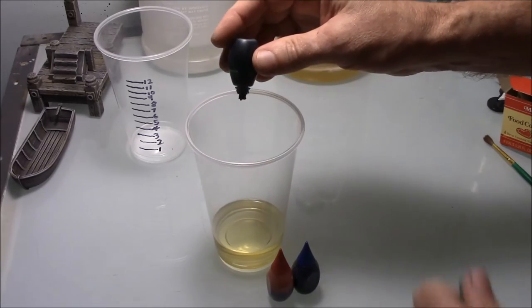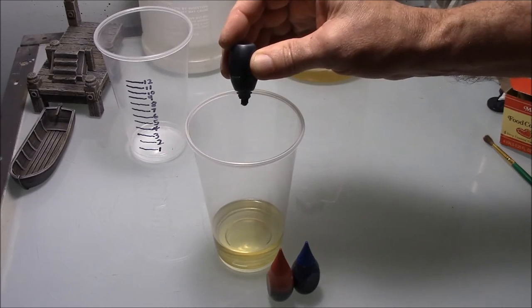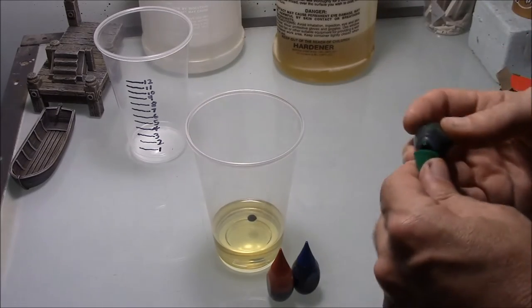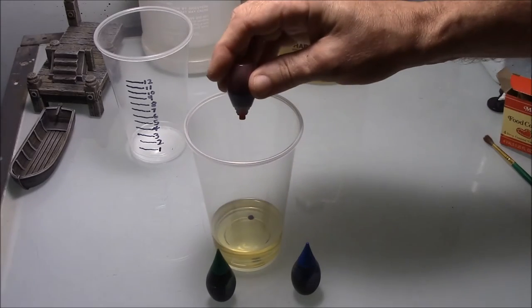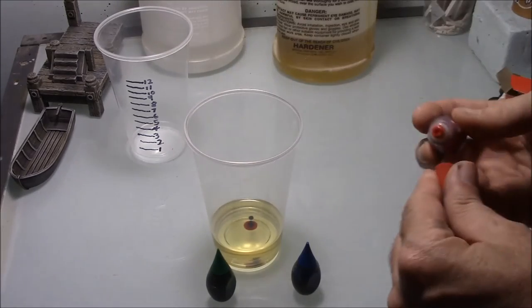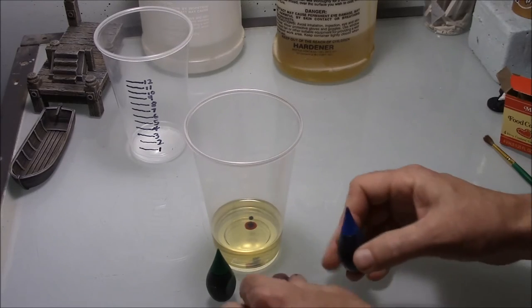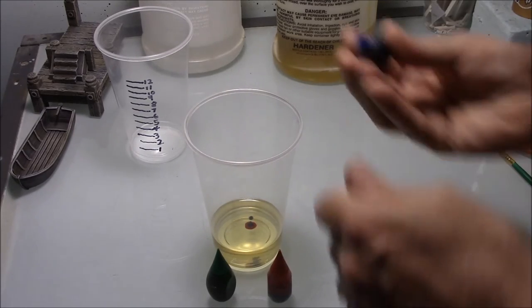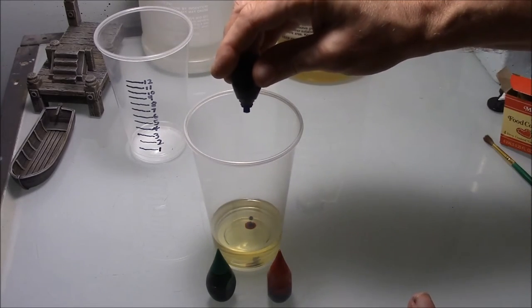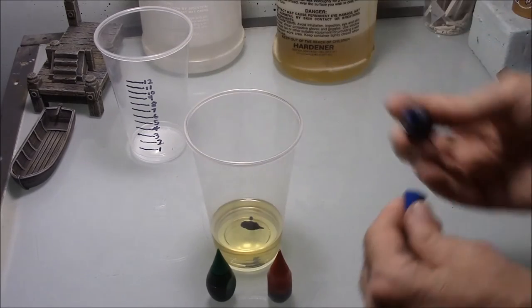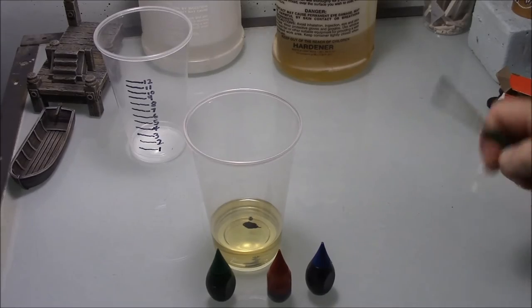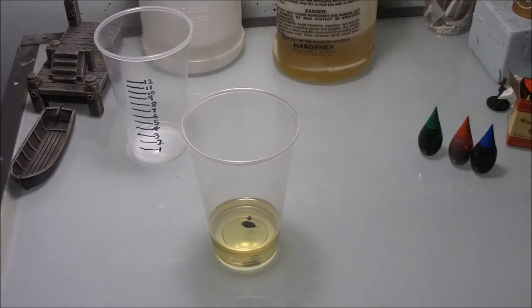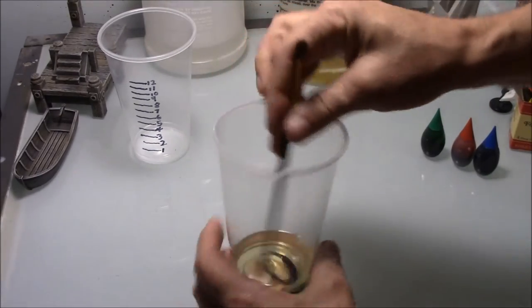And these are handy because these suckers already have kind of the dropper built into them. So there's my drop of green. And let's get my drop of red in here. There's my drop of red. And then I'm also going to add a drop of blue. There we go. So it's kind of blue-green, but the red is going to brown it up a little bit. So that's all the color I'm going to use in this for my test.